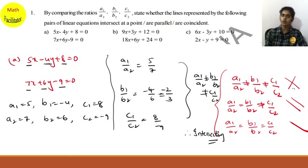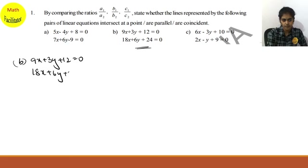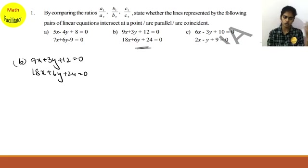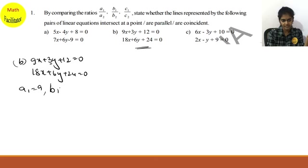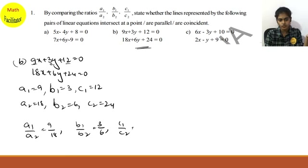Moving on to part (b): the equations are 9x plus 3y plus 12 equals 0 and 18x plus 6y plus 24 equals 0. Here a1 is 9, b1 is 3, c1 is 12, a2 is 18, b2 is 6, and c2 is 24. So a1/a2 is 9/18, b1/b2 is 3/6, and c1/c2 is 12/24.